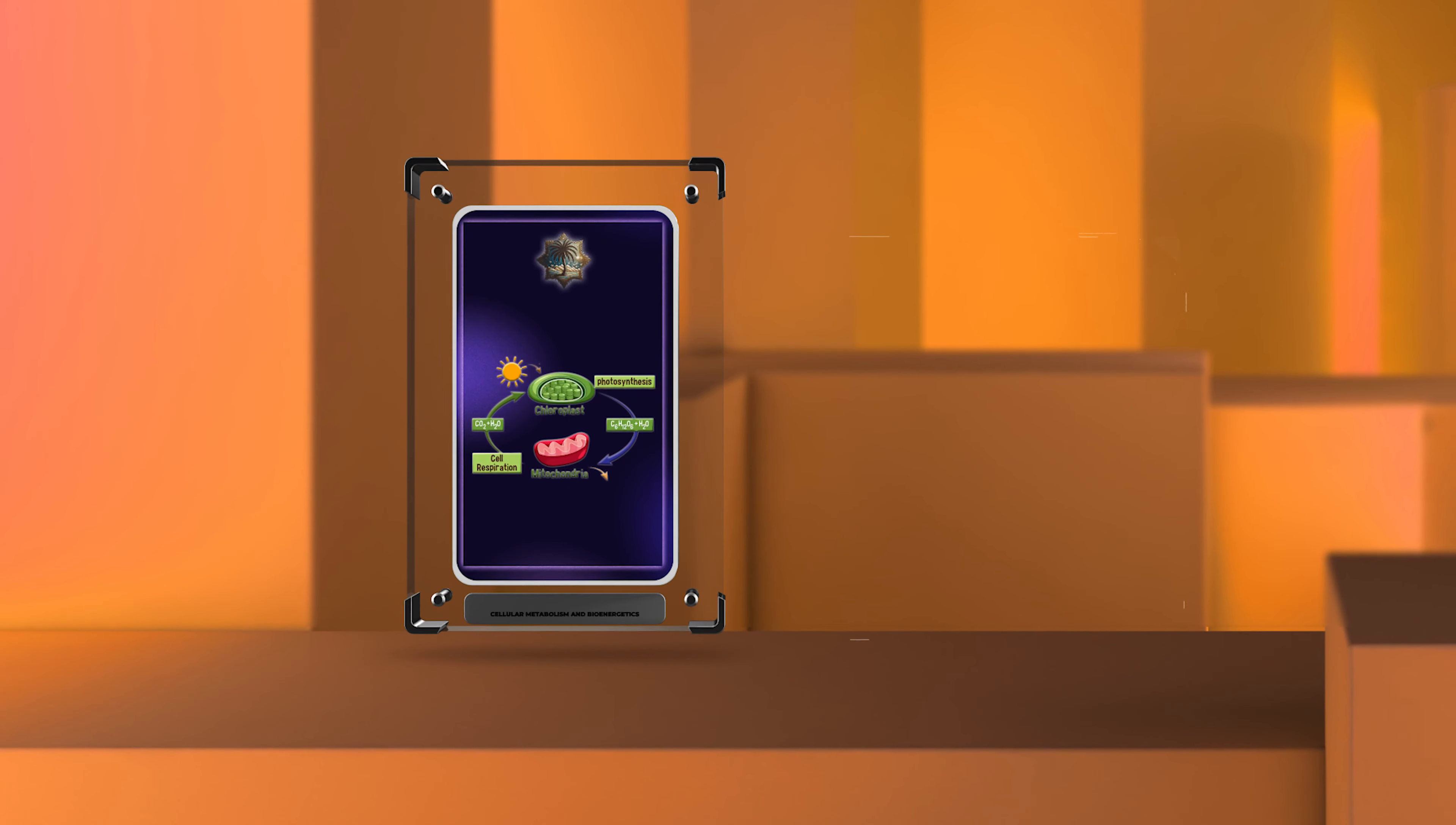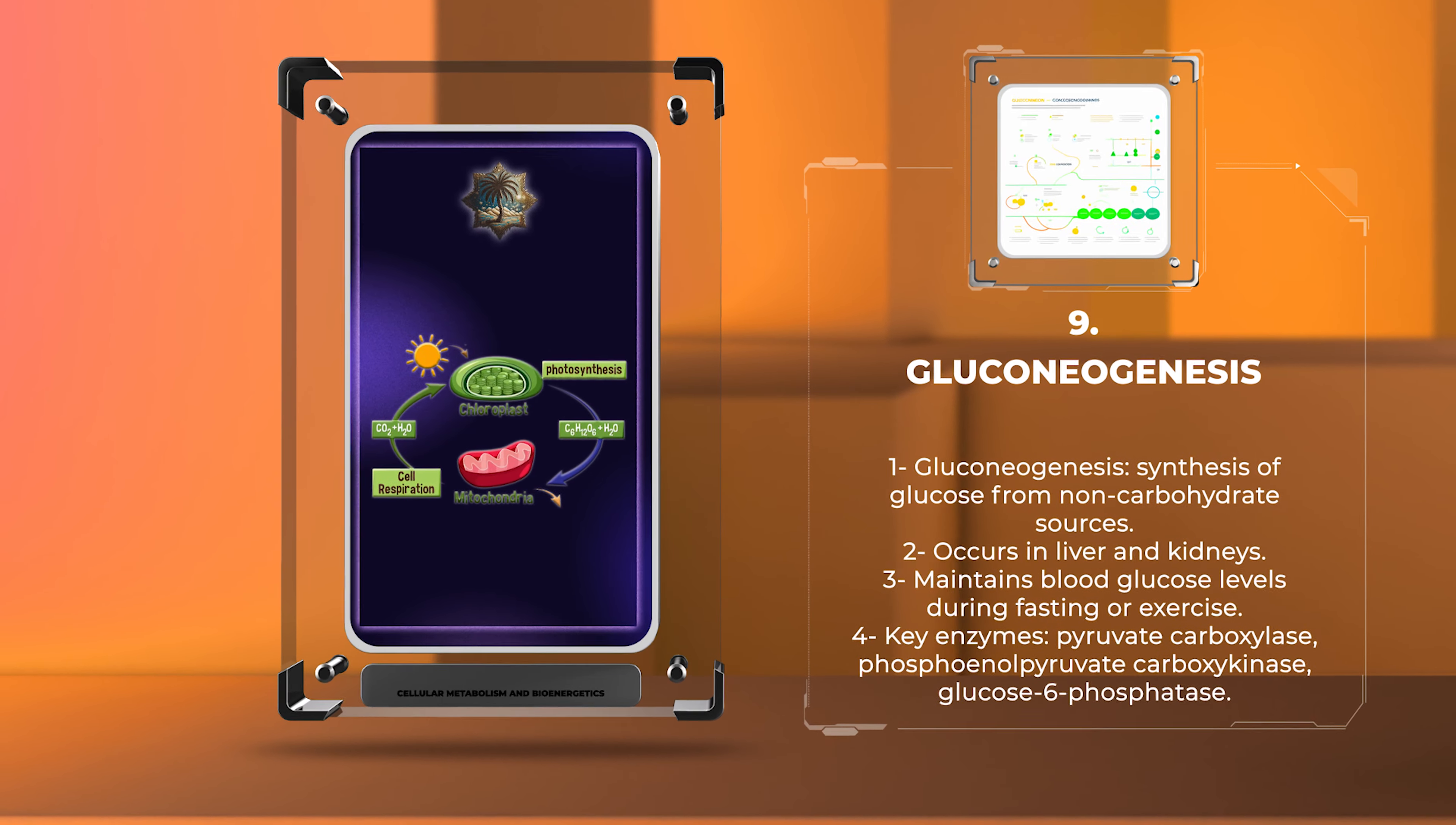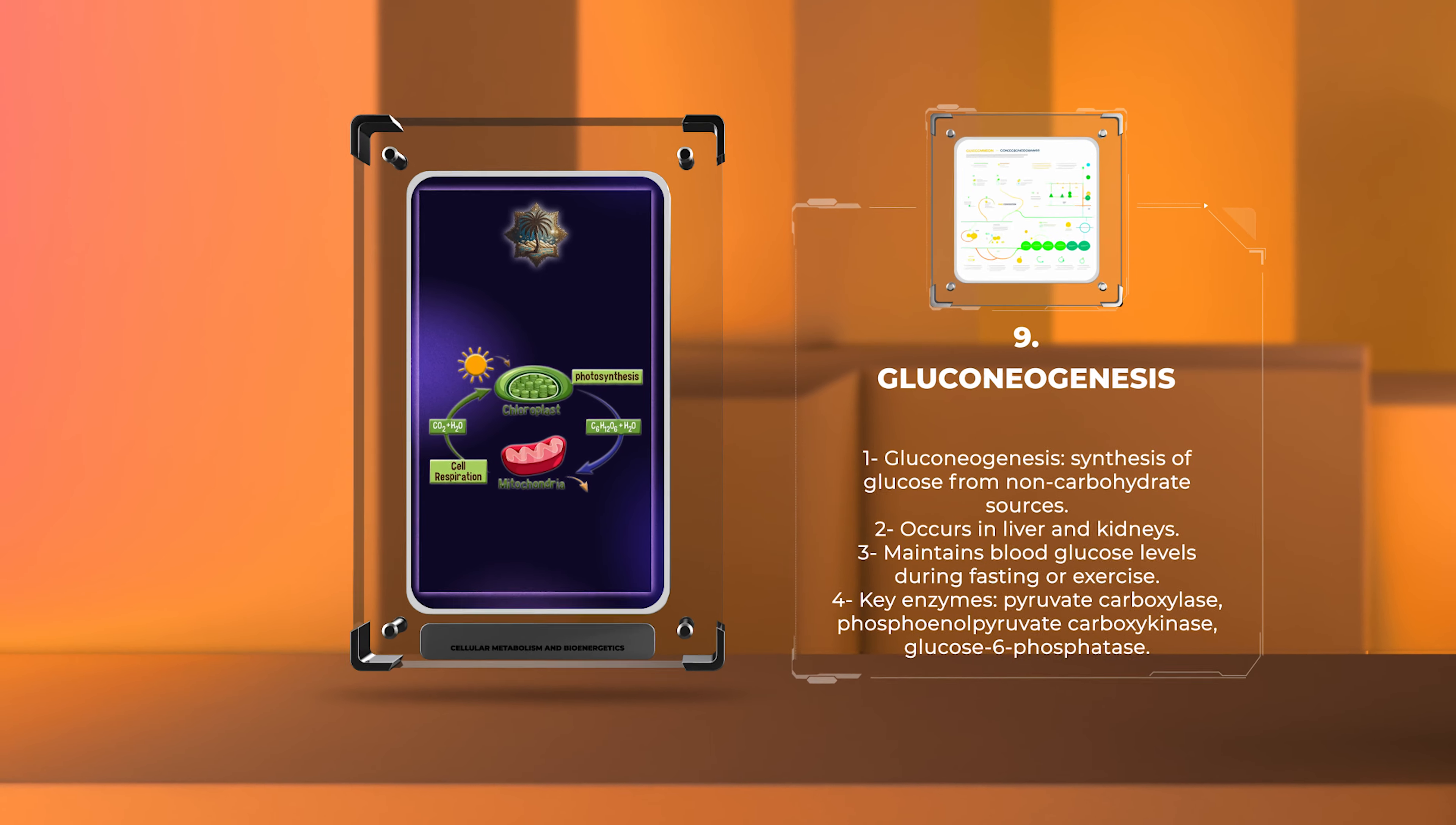Gluconeogenesis is the synthesis of glucose from non-carbohydrate sources such as amino acids, lactate, and glycerol. It occurs mainly in the liver and kidneys and serves as a vital mechanism to maintain blood glucose levels during fasting or prolonged exercise. Key enzymes involved in gluconeogenesis include pyruvate carboxylase, phosphoenolpyruvate carboxykinase, and glucose-6-phosphatase.